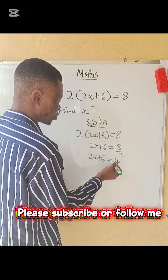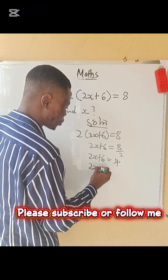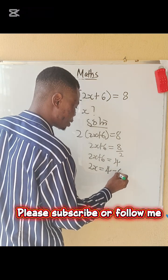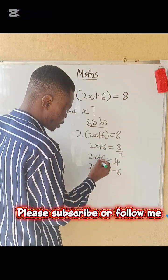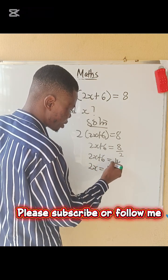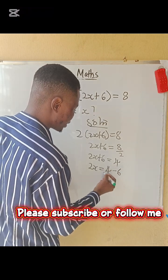Take this 6 to this side. We have 2x equals to 4 minus 6. Raising 6 here is plus. So crossing this sign of equality, it becomes what? Negative.